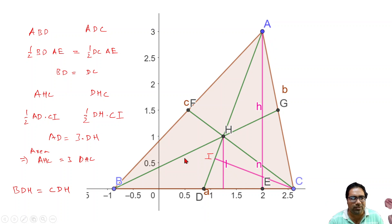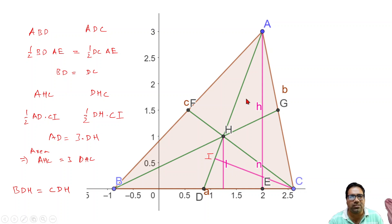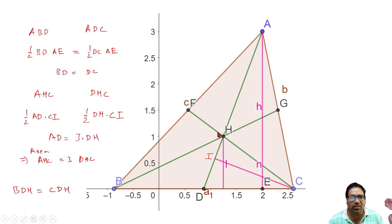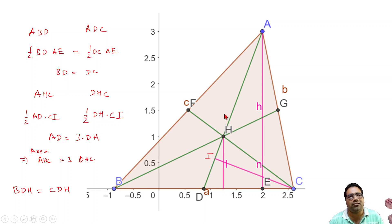Triangle DHC is one-third of ADC, and ADC is half of the overall triangle. So DHC is one-sixth of the overall triangle. Similarly, BDH is also one-sixth. By applying the same argument to the other two medians, all six sub-triangles formed by the centroid and medians are each one-sixth of the overall triangle. So the centroid and medians divide the triangle into six equal parts.